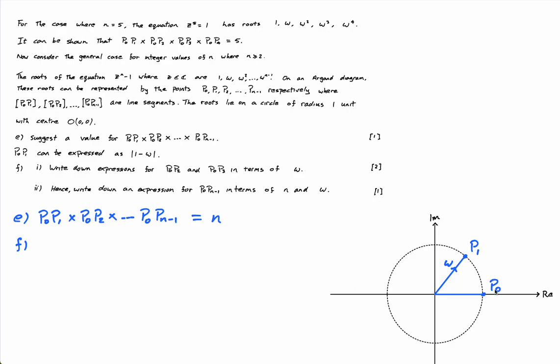So p0 p1, which is this, let's say this vector here, the magnitude of this vector would be the magnitude of this omega minus 1. So that's why p0 p1 is 1 minus omega.